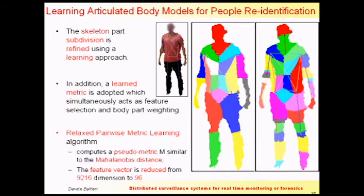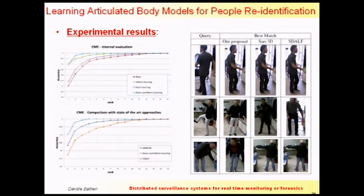I tested that on an internal dataset. On the first test I measured the improvement of each singular part: only metric learning, only bone learning, and both bone and metric learning. I also compared my system against the previous system I developed — SARC3D — and SDALF, which I mentioned earlier. As is quite obvious, a fully articulated model beats a non-articulated model, but at the same time, 3D models beat 2D models.